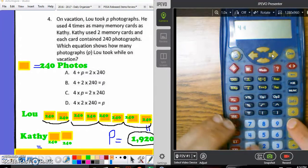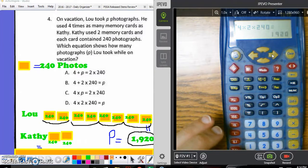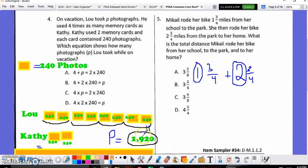Four times two times 240 equals, look at that. I get the correct answer, 1,920. Which means when I plugged in my bar model answer of the fact that he took 1,920 photos, the only one that actually came up with P equals that number is D. So, that means D is the answer to question four.